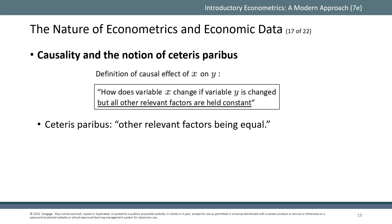Instead, you assume ceteris paribus — all other relevant factors being equal. Find two identical firms, ask one to run the ad campaign and the other not to, and at the end of the trial observe the difference in the sales of both firms to determine whether the ad campaign actually increased sales. This gives you a very good randomized control trial.